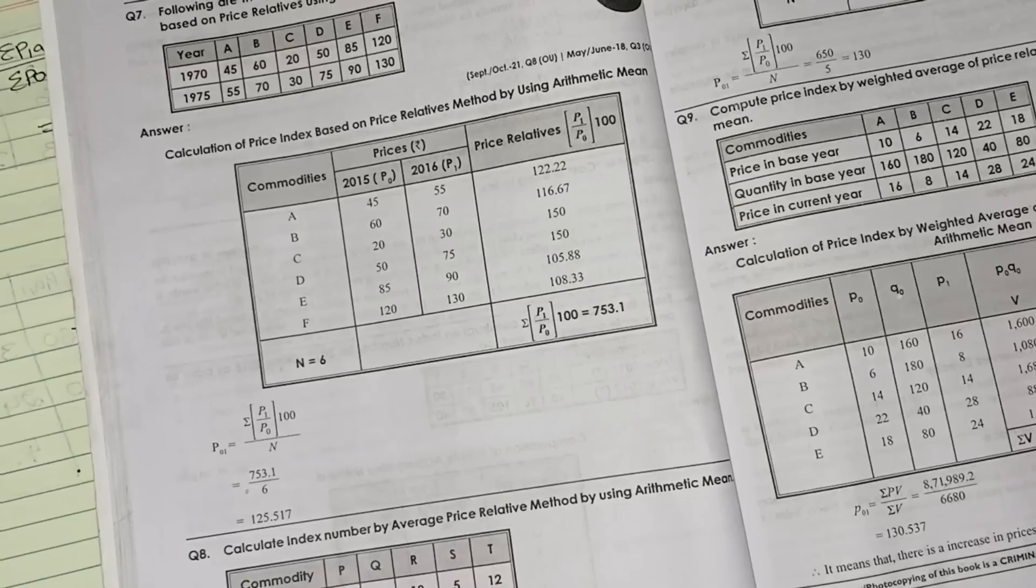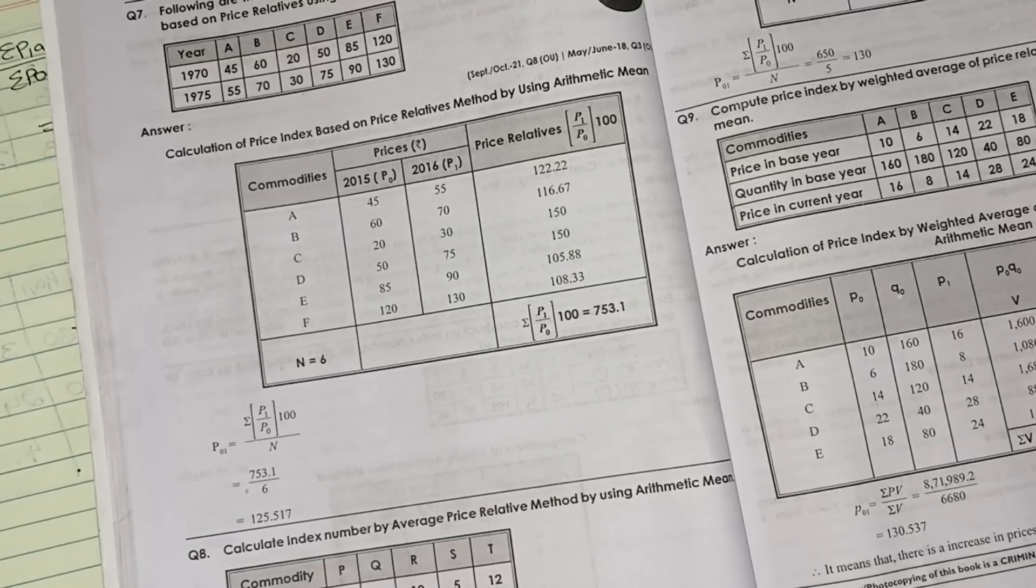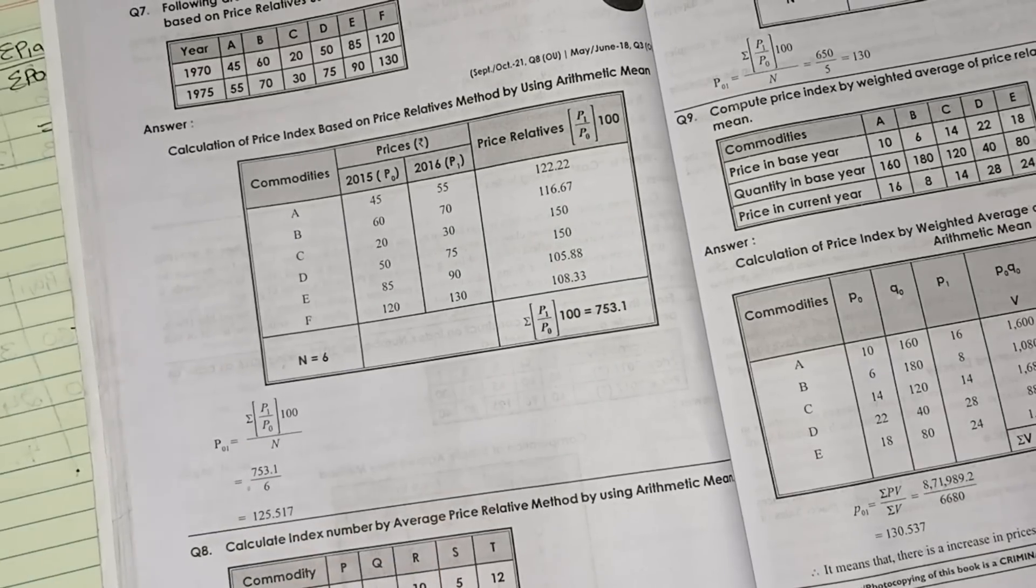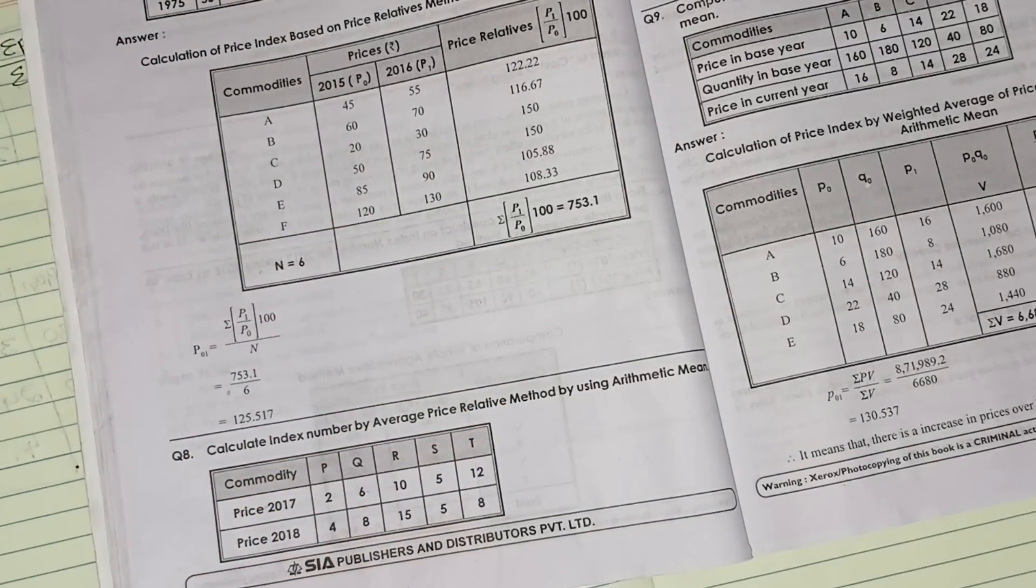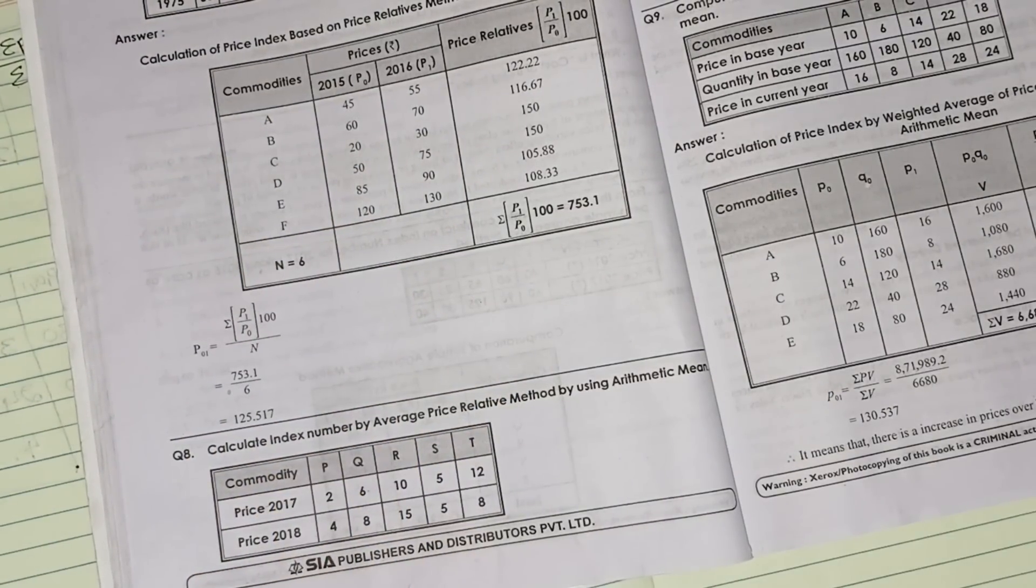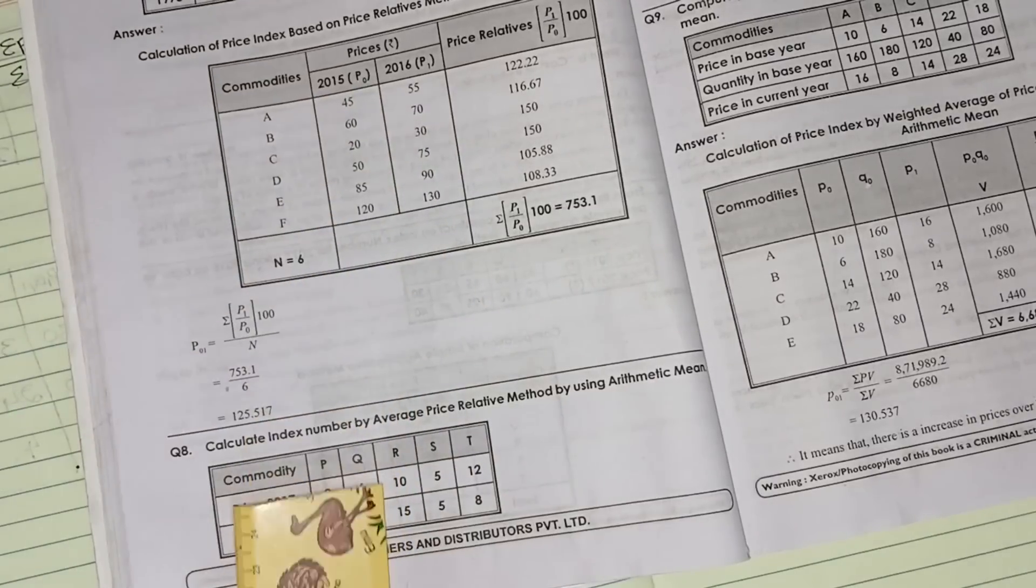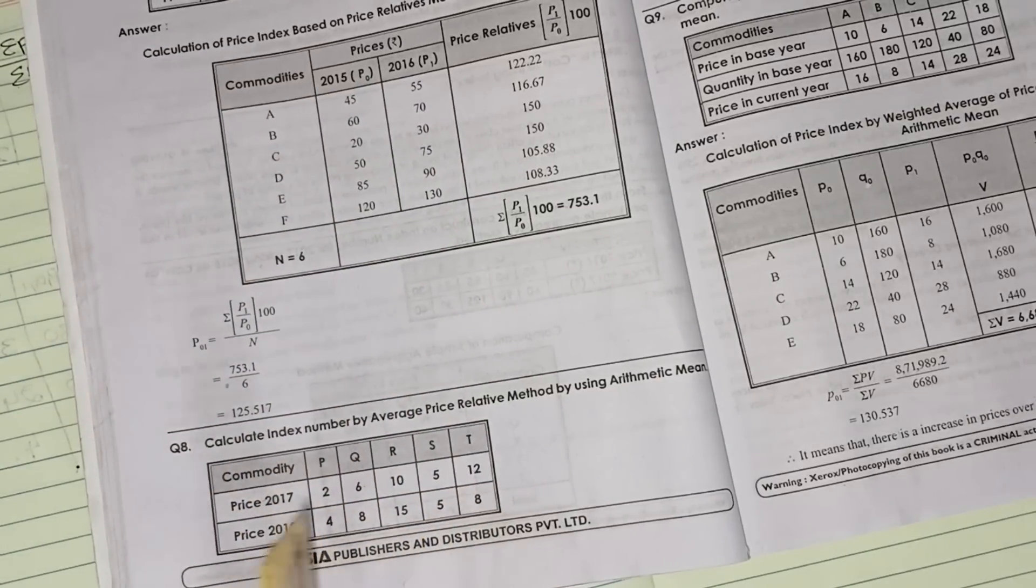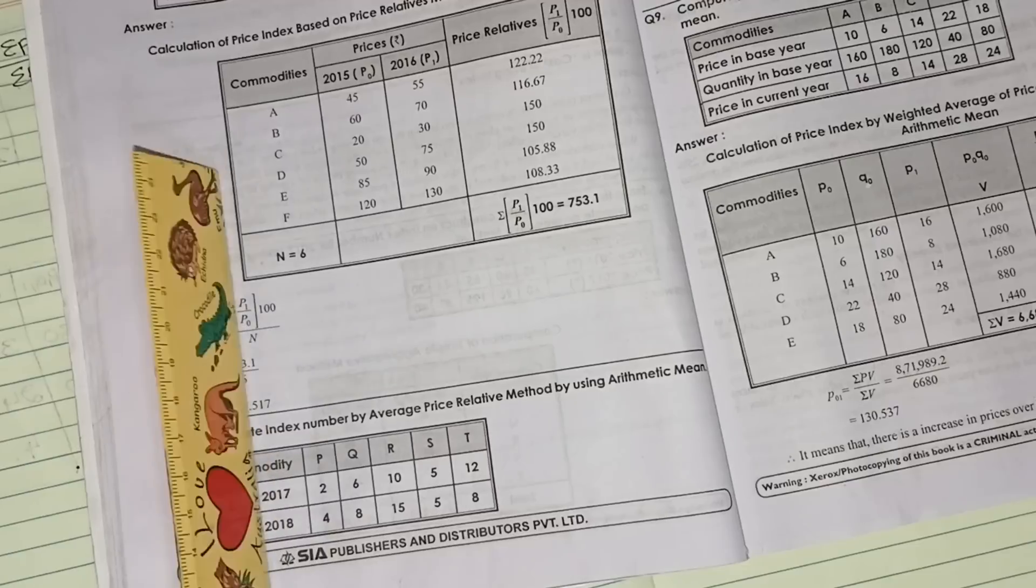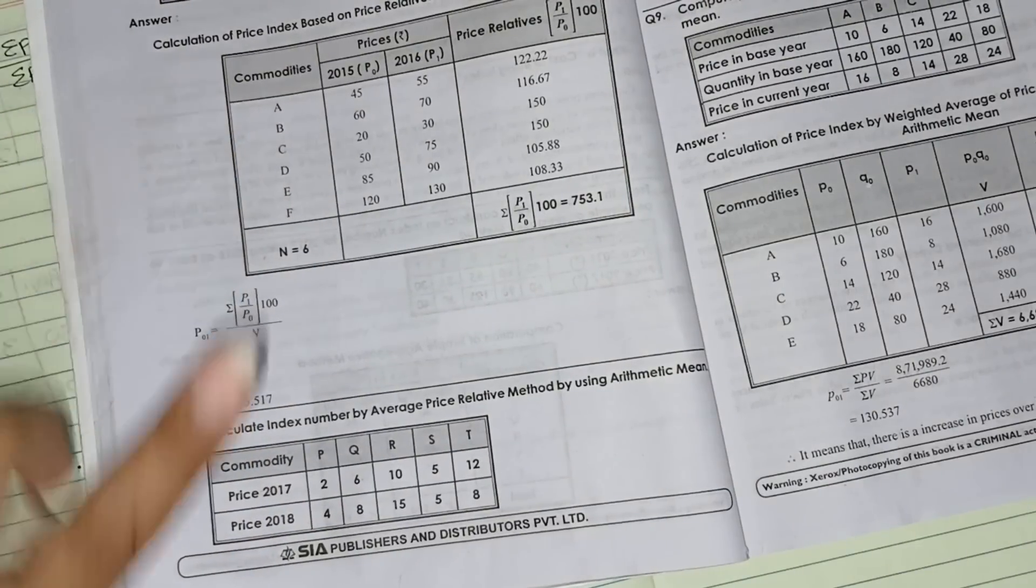Question 8 also, you see. Here they have given an index number by average method and arithmetic method. Same, this method only you need to do. Just take a screenshot and do this homework. Same as the question we just discussed in question 7, try that question.